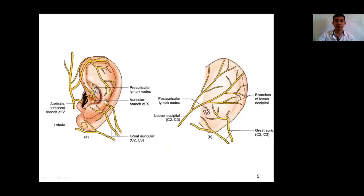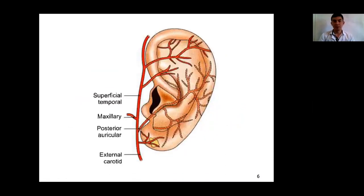In this diagram we see the two surfaces of the auricle — anterior and posterior — and their nerve supply. The anterior surface of the auricle is supplied by the auriculotemporal branch of the trigeminal nerve, the auricular branch of the vagus nerve, and the greater auricular nerve, which is a branch of the cervical plexus. The posterior surface is supplied by the lesser occipital nerve and the greater auricular nerve inferiorly. Blood supply of the auricle is provided by branches of the external carotid artery — specifically the posterior auricular branch and the superficial temporal branch.